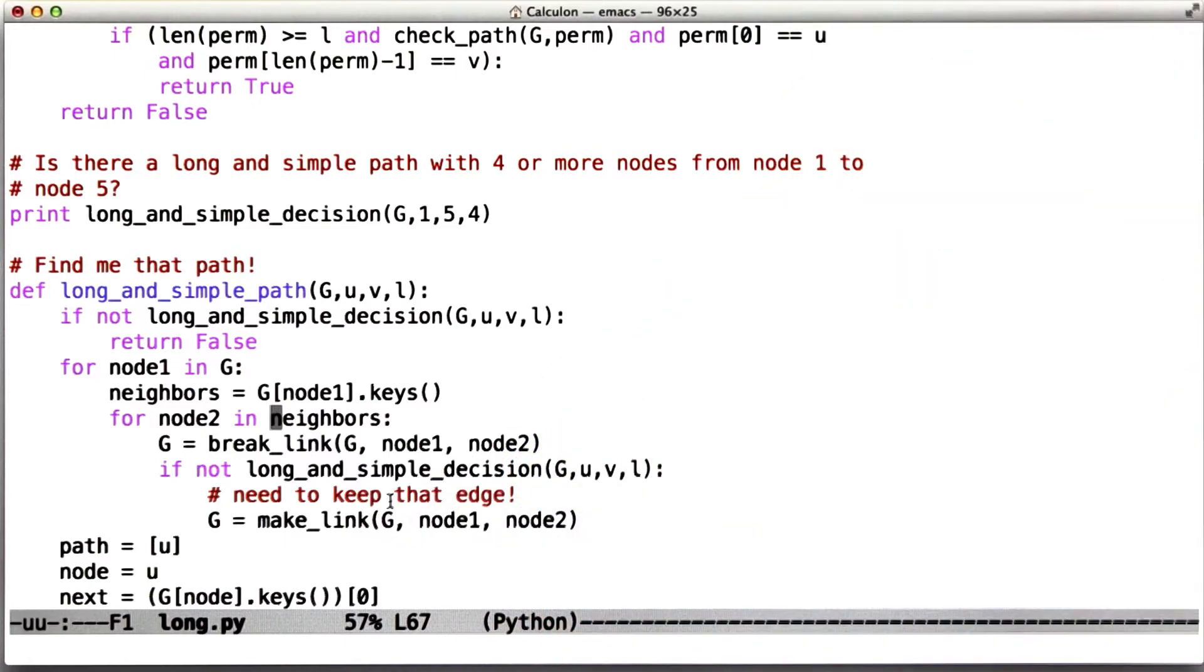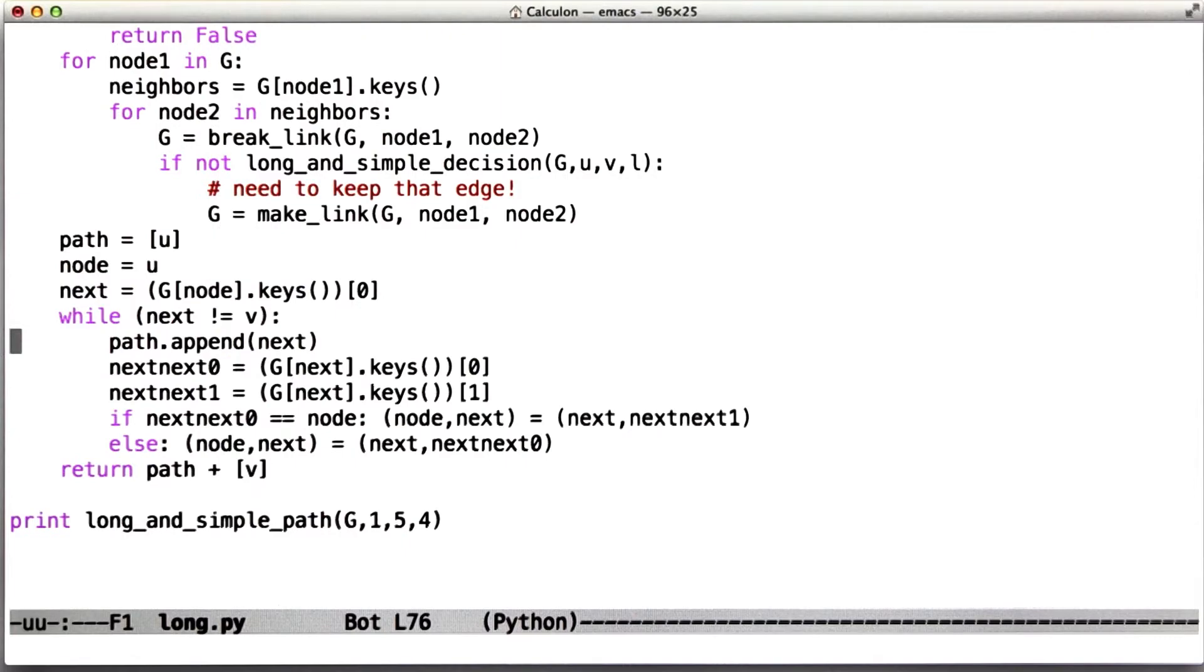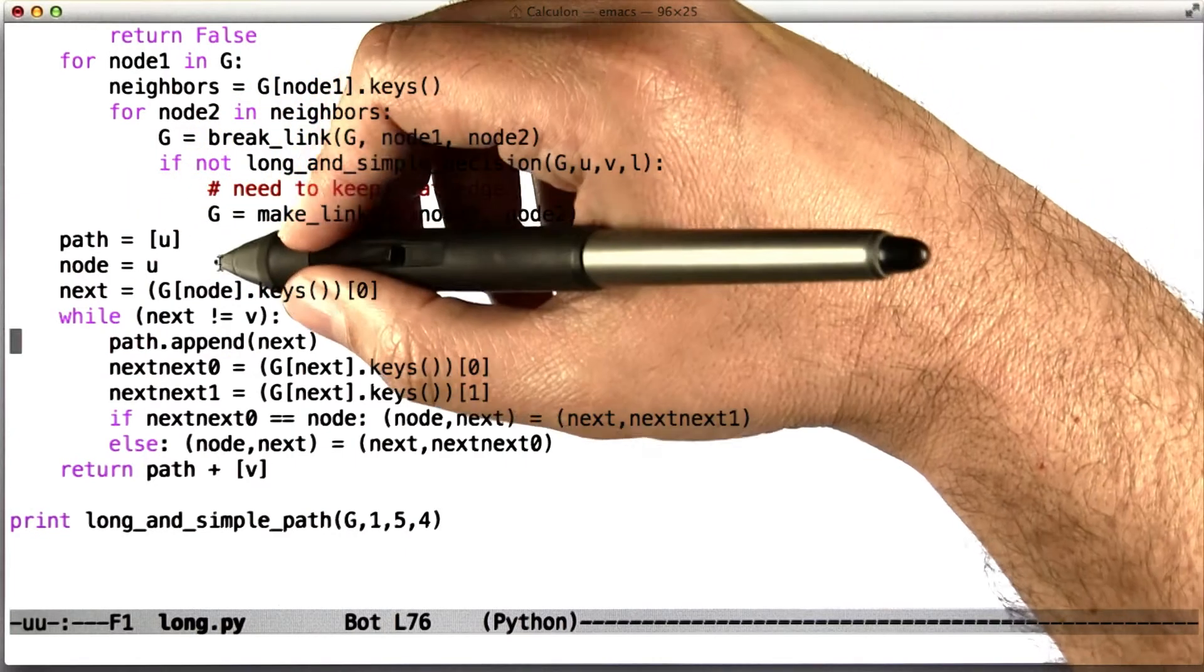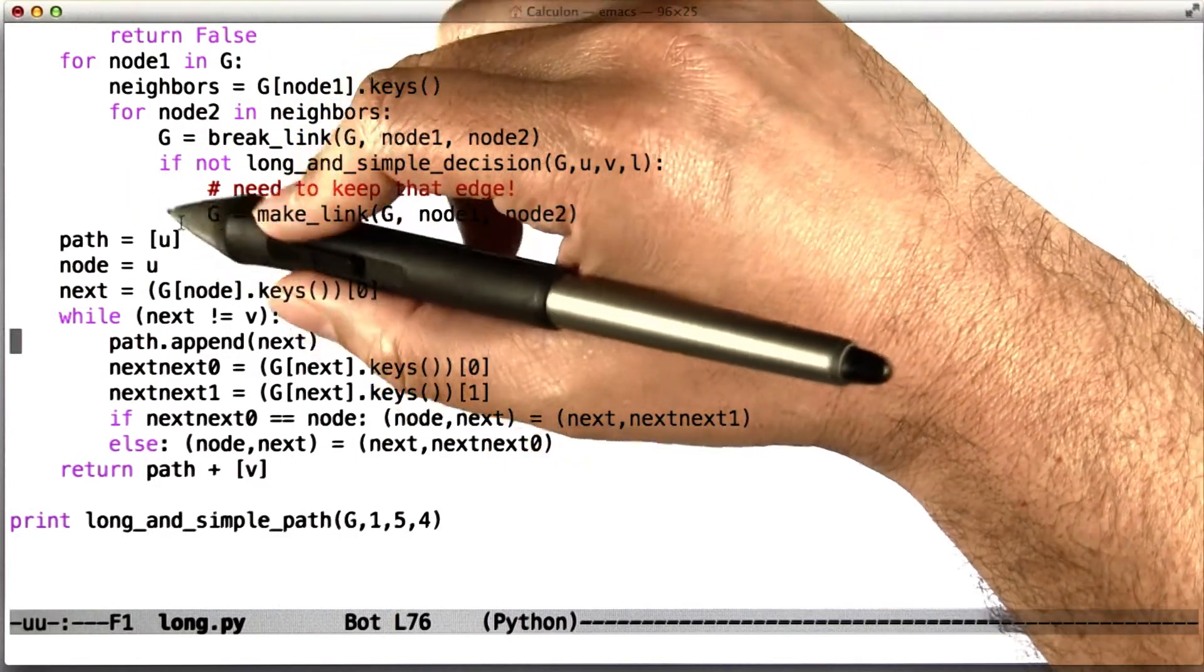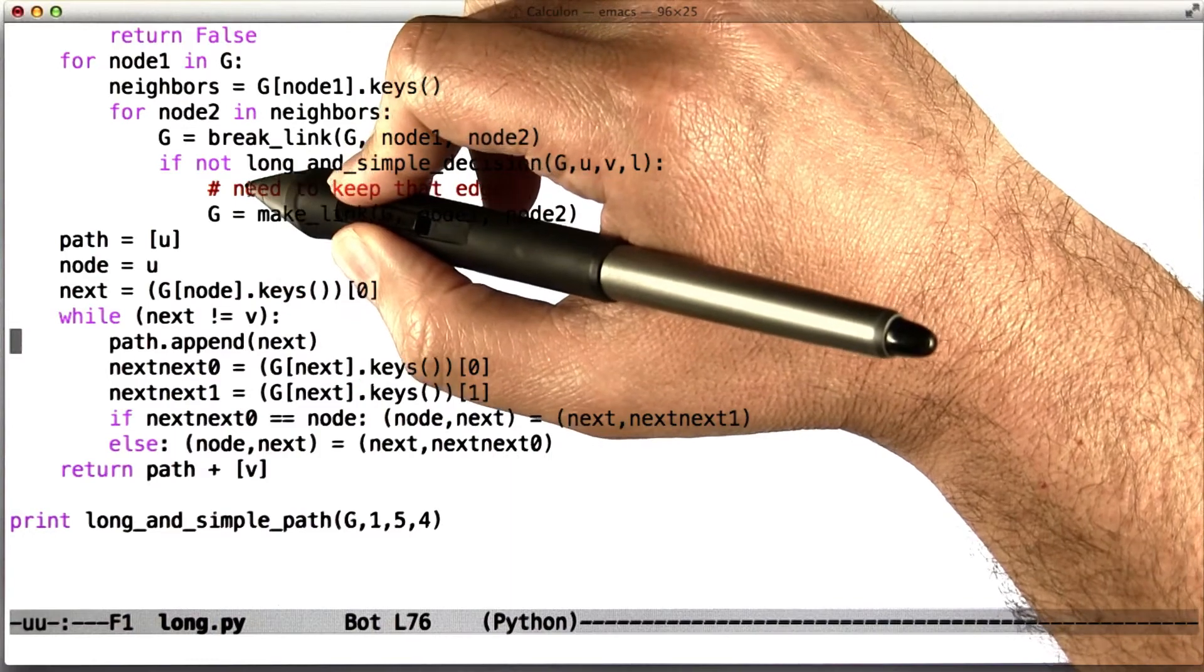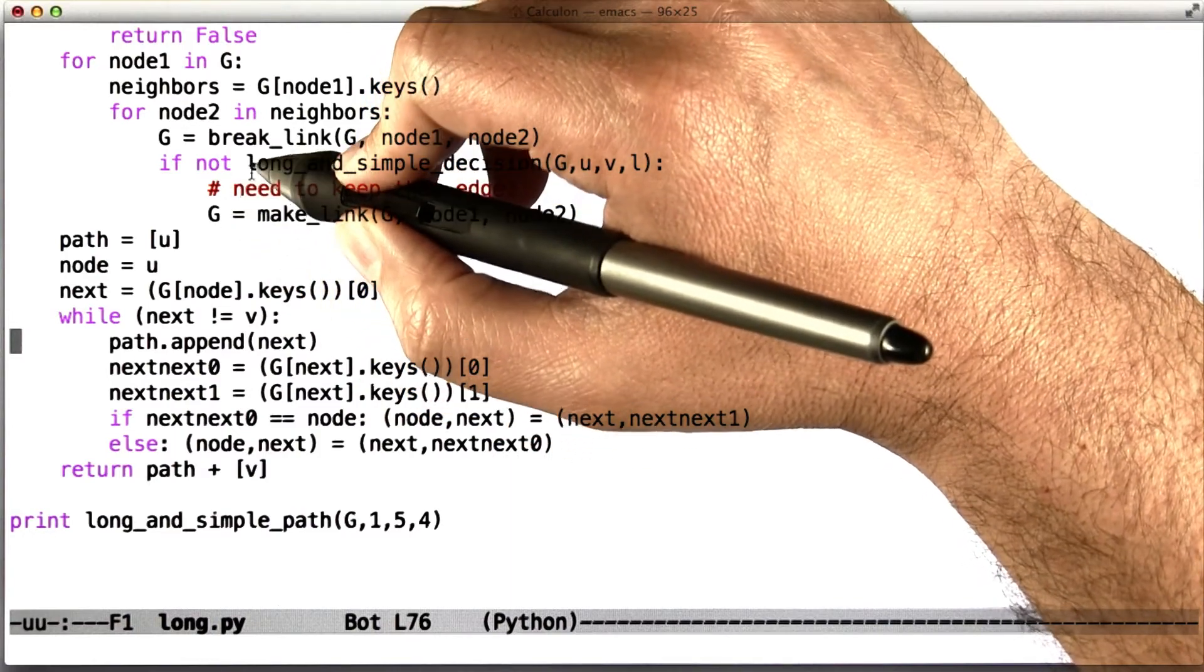It's a little bit messier than I thought it would be, but it's definitely doable. You could run a graph search on this graph, and that would work, because all that's left is the path that you want.